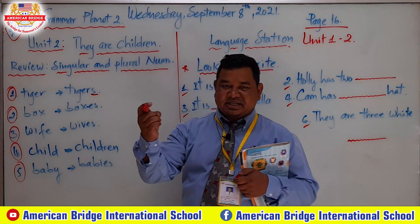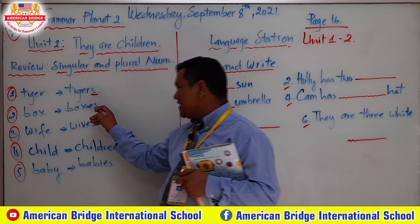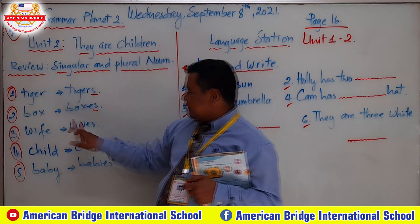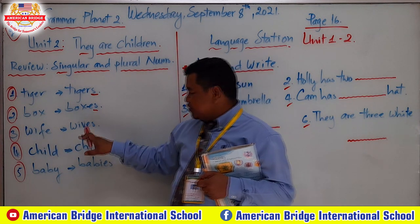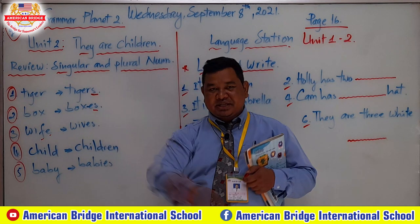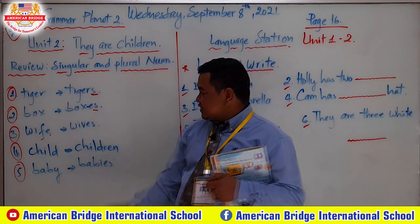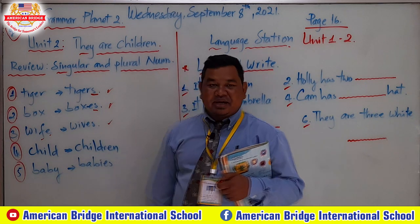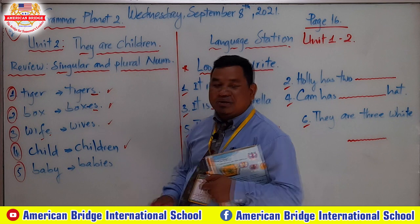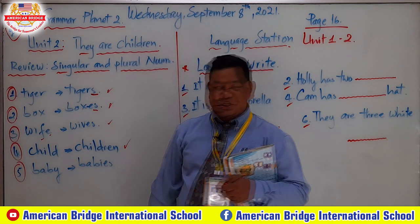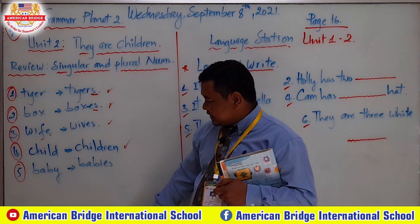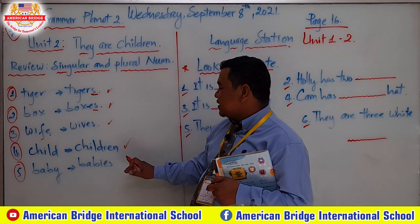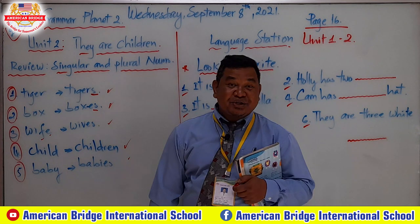For example, 'boss' becomes 'bosses.' Rule three: if the noun ends in -F or -FE, you erase it and add -VES. For example, 'wife' becomes 'wives.' Rule four: some nouns are irregular — you have to memorize them. For example, 'child' becomes 'children.' Rule five: if the noun ends in -Y after a consonant sound, you change -Y to -IES. For example, 'baby' becomes 'babies.'